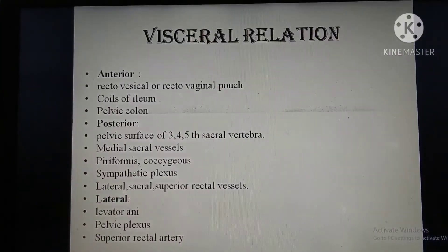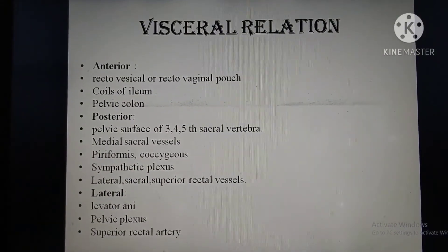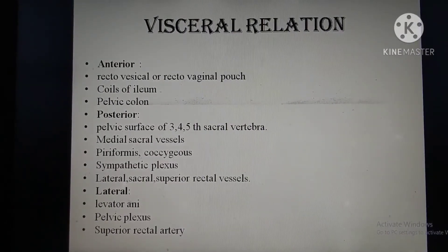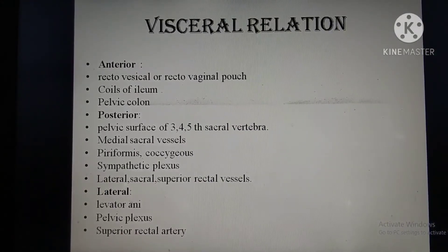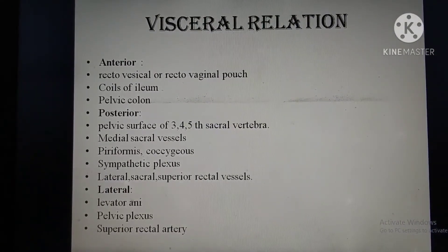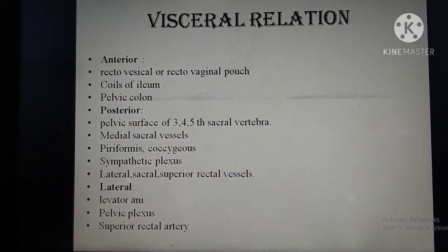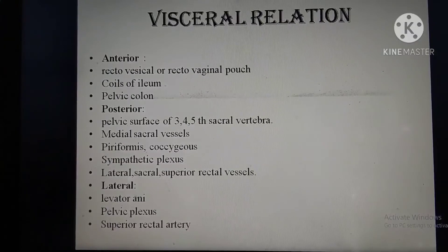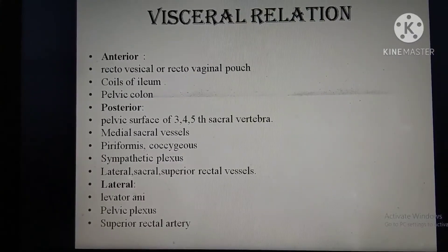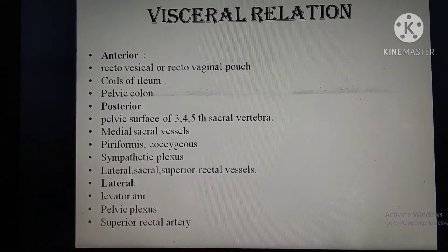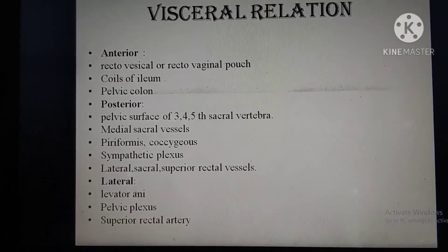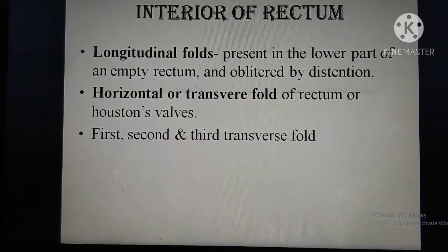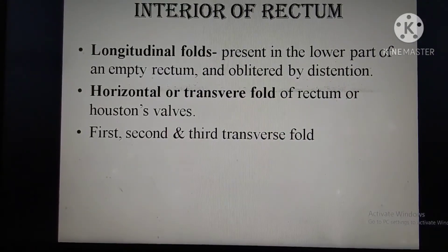Visceral relations: anteriorly there is the recto-vesical or recto-vaginal pouch in females, and coils of ileum and pelvic colon. Posteriorly are the pelvic surface of the third, fourth, and fifth sacral vertebrae, median sacral vessels, piriformis, coccygeus, and sympathetic plexus. Laterally are the lateral sacral vessels and superior rectal vessels, and the levator ani forming the pelvic diaphragm or pelvic floor.